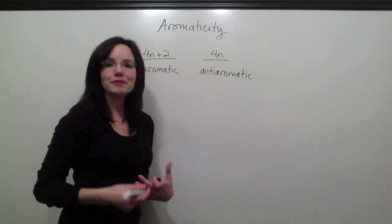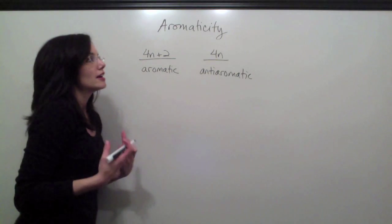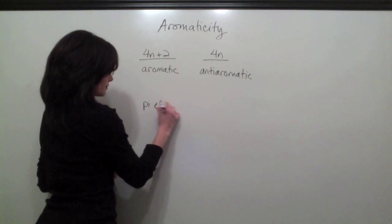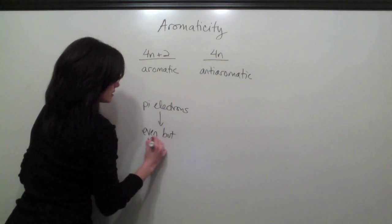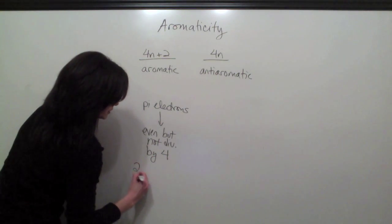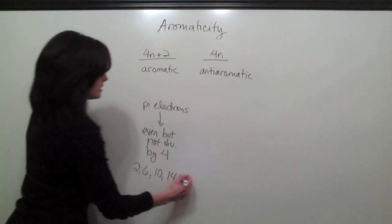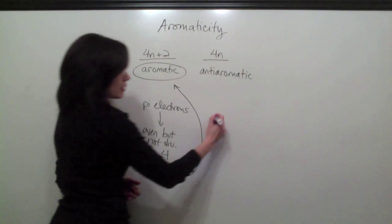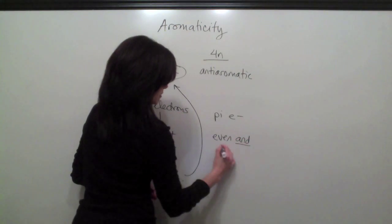Now, there's nothing wrong with that, but in my opinion, there's a much easier way to think it through. All you need to do is look at your number of pi electrons, and if it's even but not divisible by 4. For example, 2, 6, 10, 14, that tells you you have an aromatic compound.